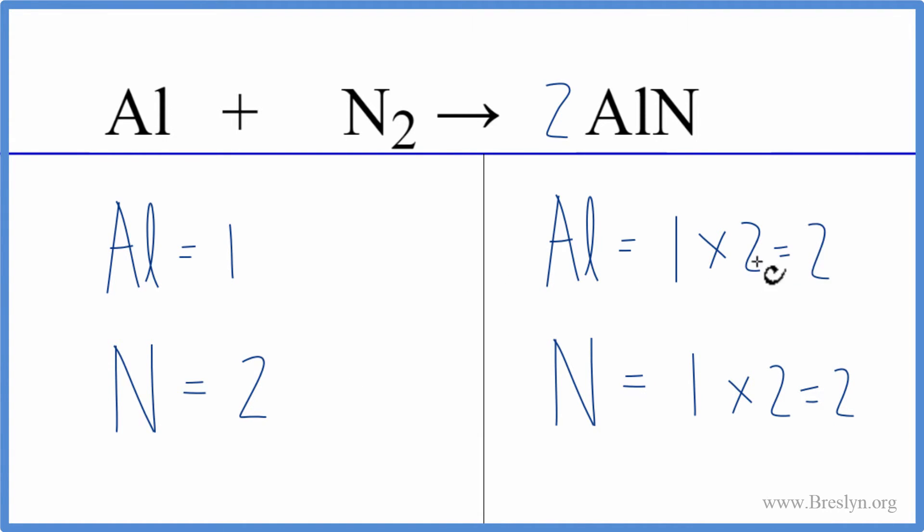To fix the aluminums, we have 2 here and 1 here. Aluminum by itself, we could put a coefficient of 2 in front of it. That will only change the aluminum. We have 1 times 2, that gives us 2.